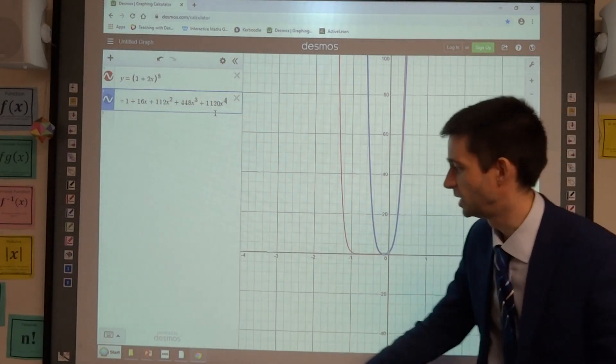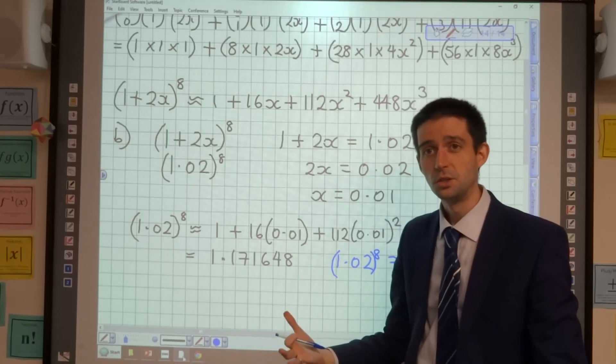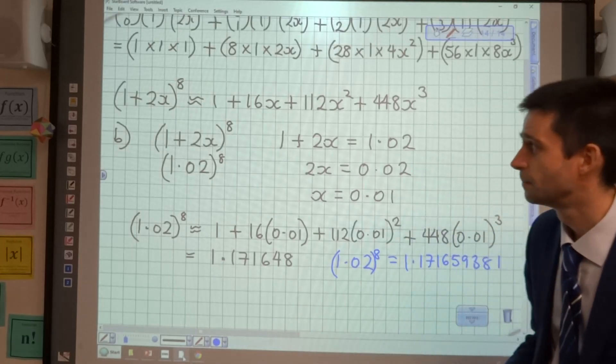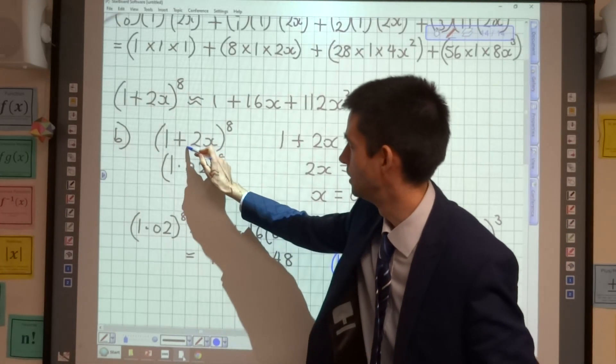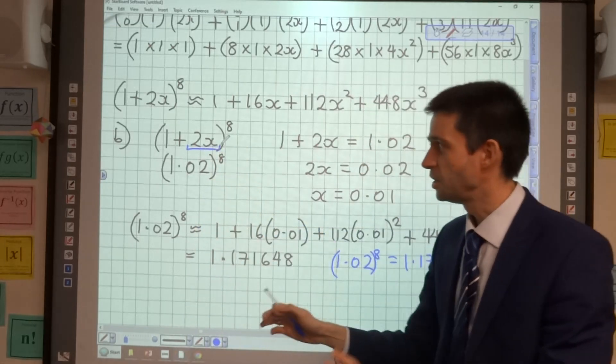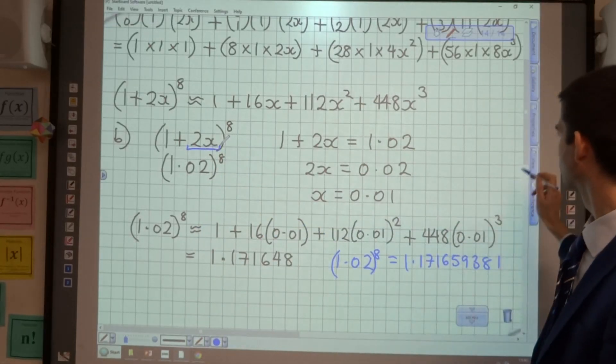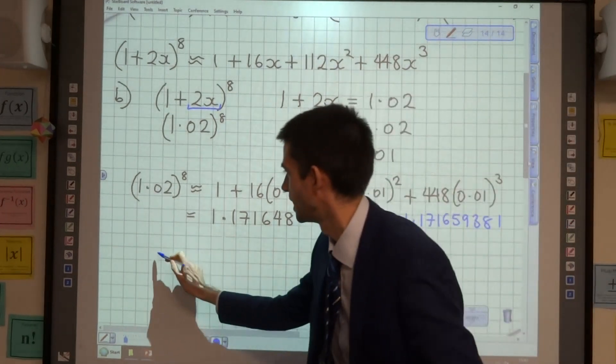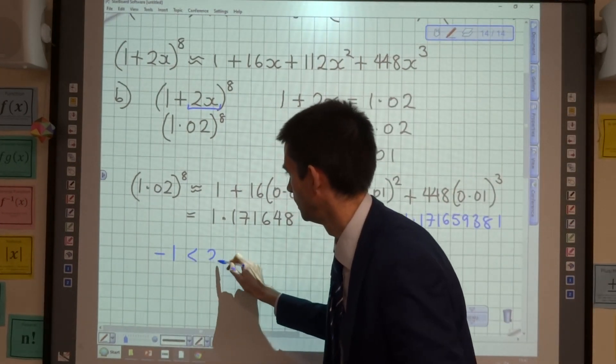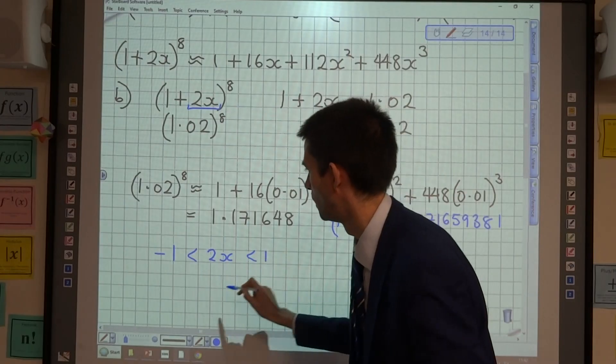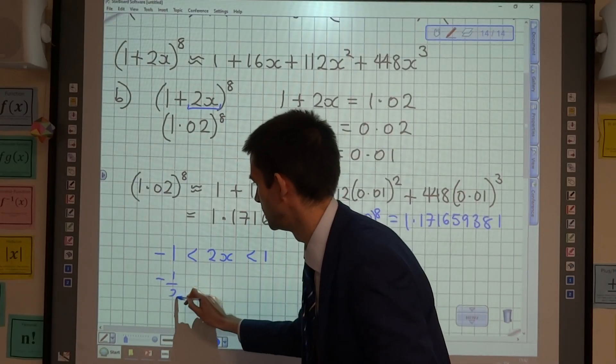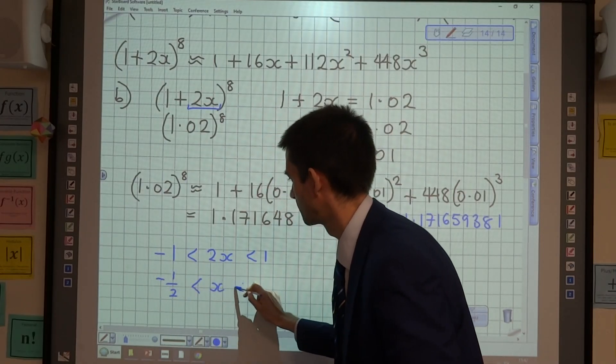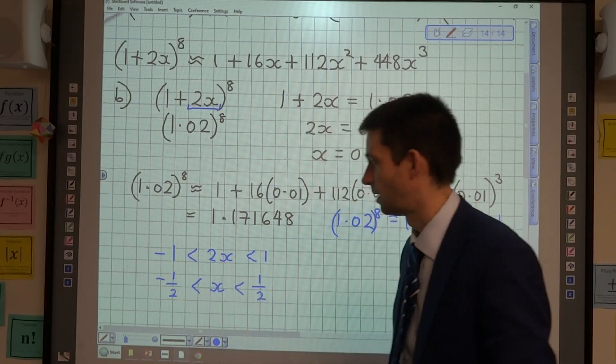Now, sometimes we talk about range of validity, so for which values of x is your expansion valid. And what you have to do is you have to look at the x bit, and it's when that is between negative 1 and 1. So if I were to say that 2x is between negative 1 and 1, then my expansion is going to be valid for x values between negative 1 half and 1 half.